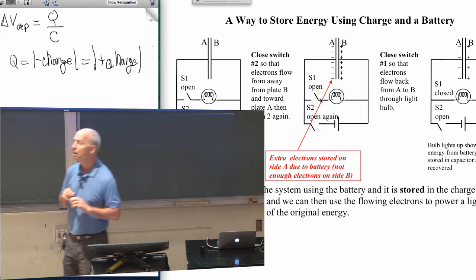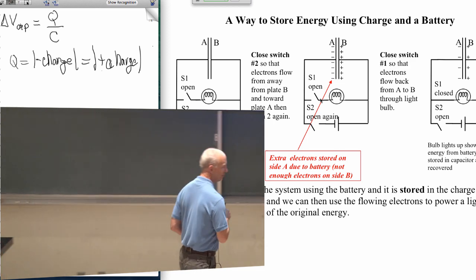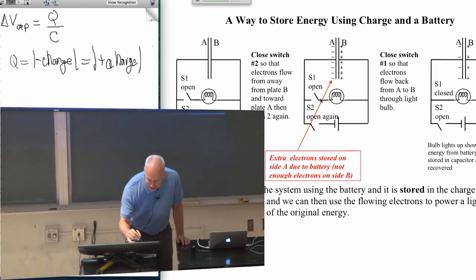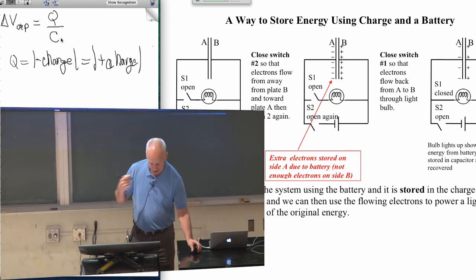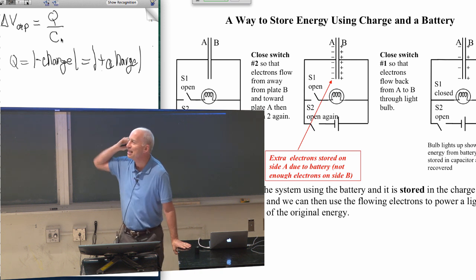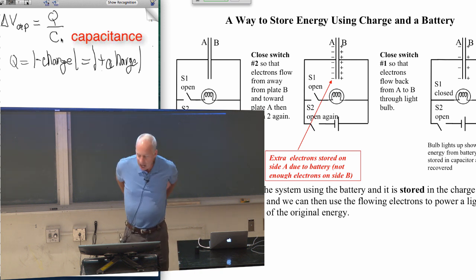Student asks: What is the C in that changing voltage on the bottom? C is the capacitance. It tells you how much charge per volt you can put on that capacitor.